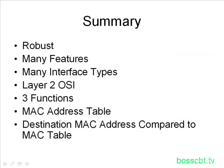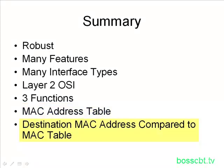To summarize: switches are very robust with many features compared to bridges and hubs. They support many different types of interfaces — fast, 10, or gigabit Ethernet — and reside at layer 2 of the OSI model. There are three primary functions: forwarding frames, learning addresses, and loop avoidance. We also looked at the MAC address table, its different names, what information it stores, and the actual forwarding process: look at the destination MAC address, compare it to the MAC table, find out which port that destination MAC address lives on, and send it out that port. Now you know how a switch forwards frames. Thanks for watching.